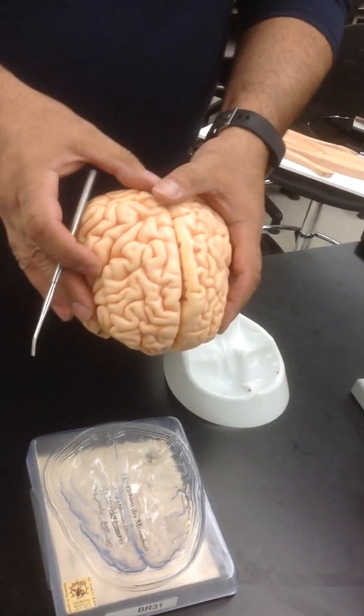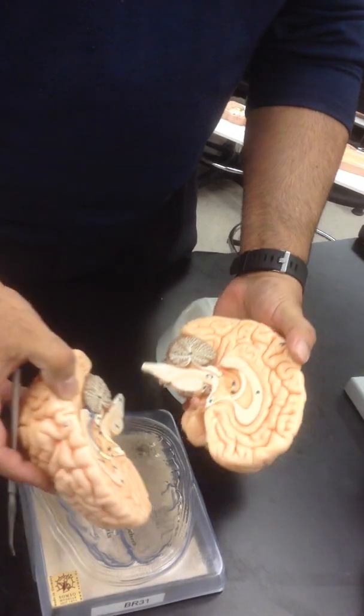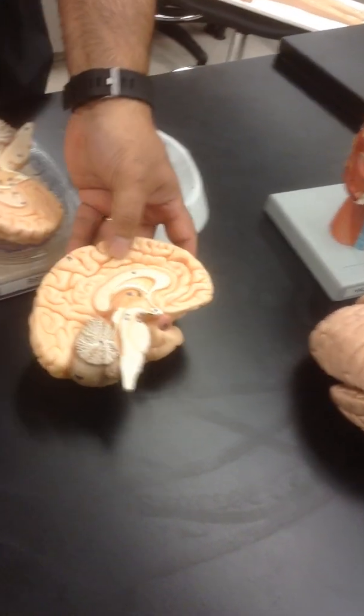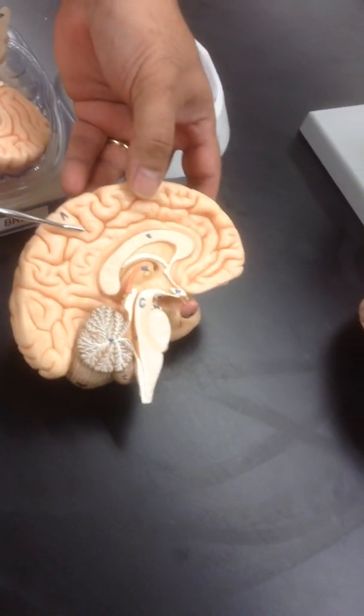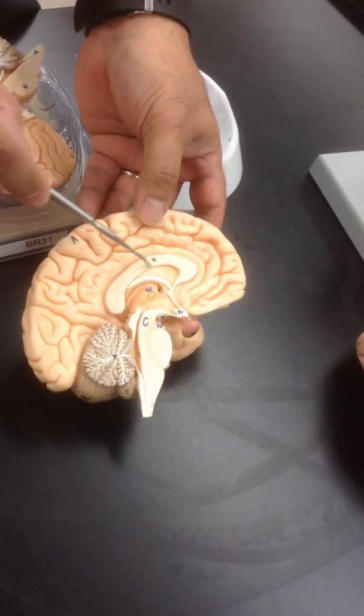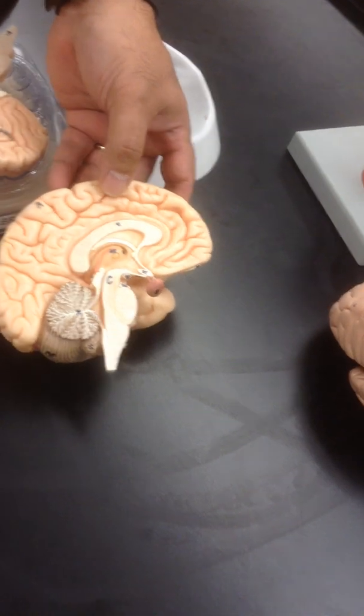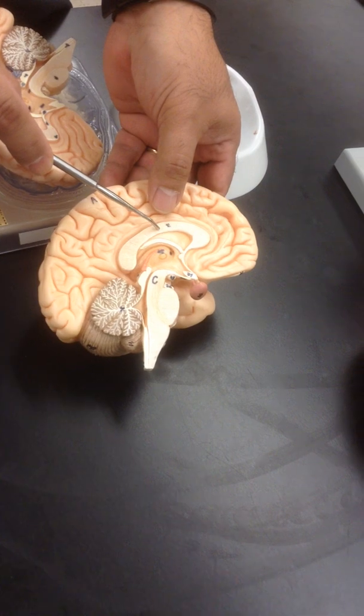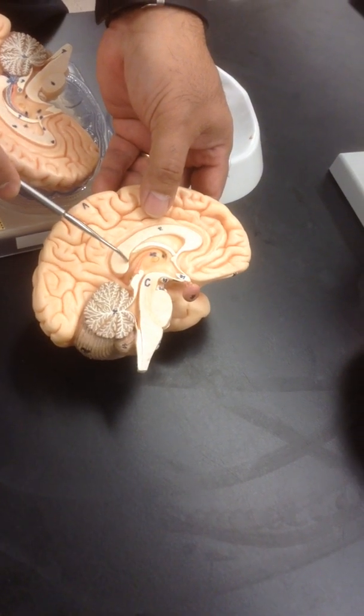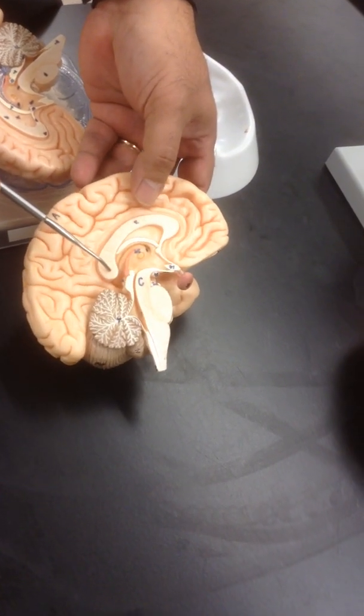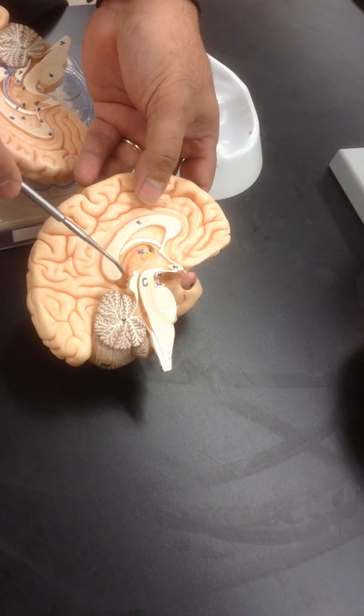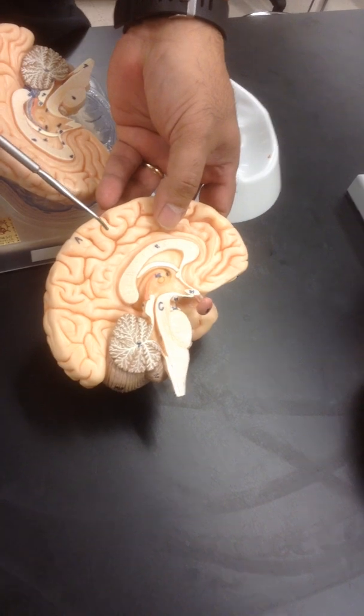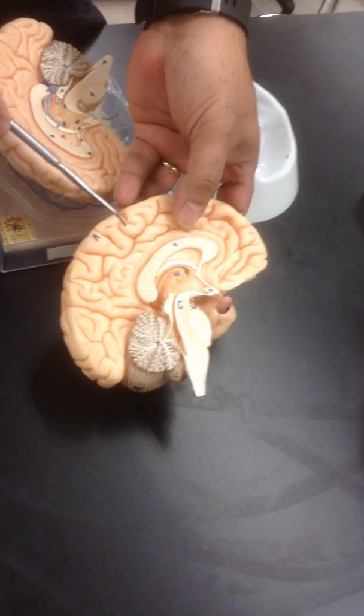If I separate the brain right down the center, now I can visualize some of the structures. The two halves of the cerebrum attach to one another by this structure known as the corpus callosum. The corpus callosum allows the communication to occur between the two sides of the brain. You can also see this little structure here, which is your pineal gland, which releases melatonin to help you sleep.